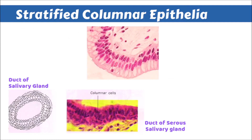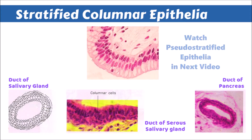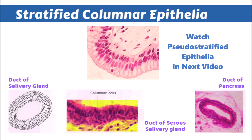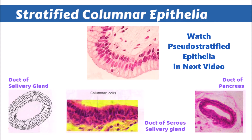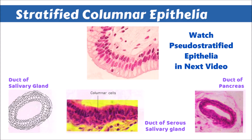The examples shown include the duct of the salivary gland, where we can observe the section of the duct, and the duct of the serous salivary gland. Another diagram shows the structure lined by columnar cells in many layers. The duct of the pancreas is shown in the last diagram.